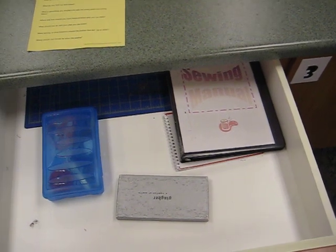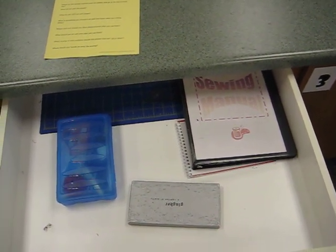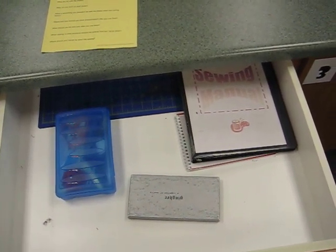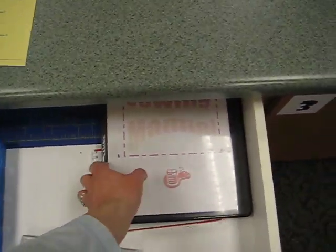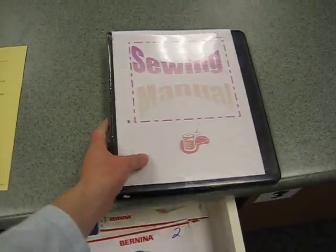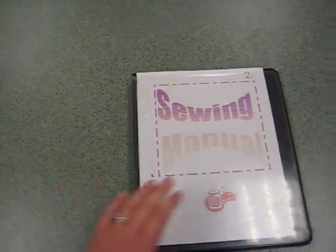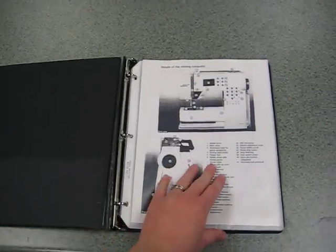The first question on the test is what two things need to be on the counter at the end of every day. The first one is your sewing manual. In your sewing manual, you'll have directions for every project that we're going to complete. It has a list of the parts of the machine, how to thread the machine, crazy stitch...